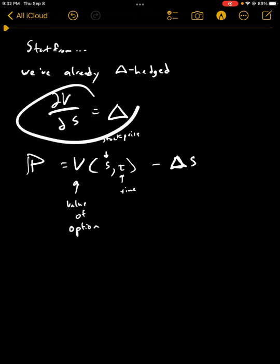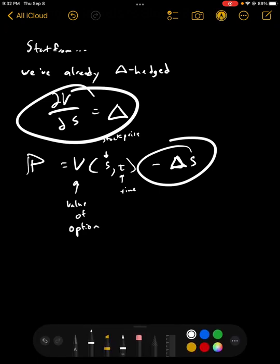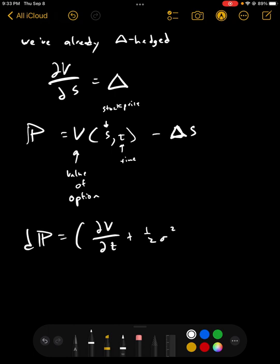And you can see here we've got dV/dS is equal to delta. So what this is going to give us is that the change in the portfolio value is equal to the derivative of V with respect to t plus one-half sigma squared s squared, the second derivative of V with respect to s, close parentheses there, and dt.